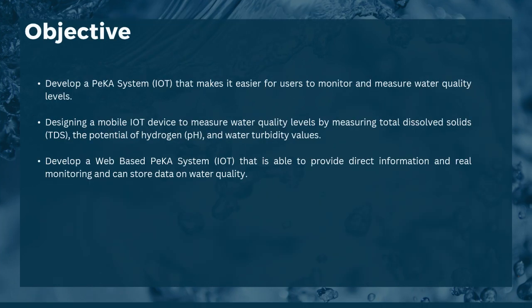The objectives of the system are: First, development of the PeKA IoT system to make it easier for users to monitor and measure water quality levels. Second, design a mobile IoT device to measure water quality levels by measuring Total Dissolved Solids (TDS), potential of hydrogen (pH), and water turbidity values.